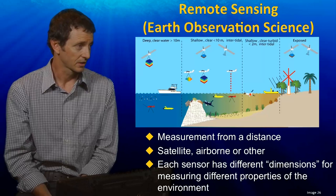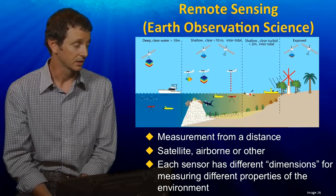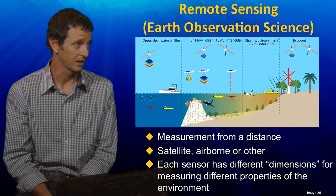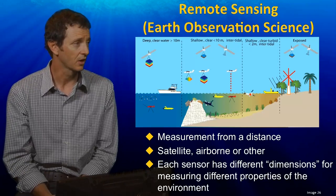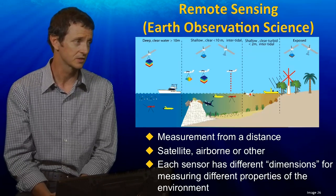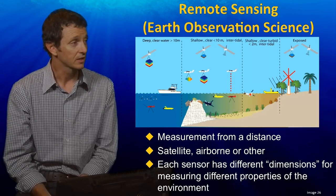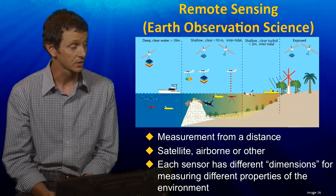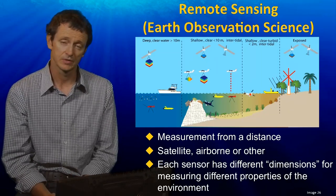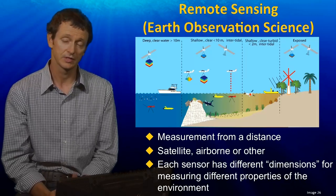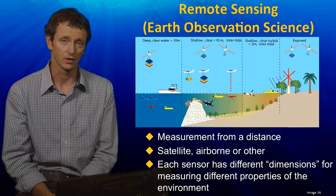If we look at coastal environments like the one in the diagram to the right, there are a number of ways that we can collect information remotely from that environment using Earth Observation Science techniques. As you can see in that diagram, we can put cameras and sensors on a whole range of platforms. Each sensor will collect different types of information depending on the type of sensor and where it is in the environment. In the next couple of slides I'll explain the key characteristics of the sensors and the different types of information they produce for looking at coastal environments.